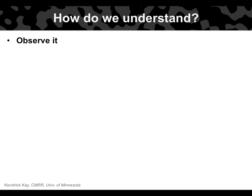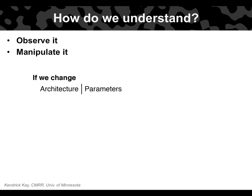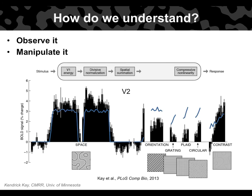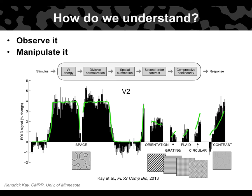Besides observing a model, we can also manipulate it — change the architecture or parameters — and observe the effect on model accuracy or tuning properties. For example, looking at responses of a V2 voxel, I'm showing cross-validated predictions of a model that omits a very specific computation. Performance is okay but not great. When we add that one computation back in and refit, accuracy goes way up. This forges a direct link between model architecture and model accuracy, showing that second-order contrast is critical for good model performance. The underlying idea is to be stingy: don't include additional complexity unless you can definitively show you need it.